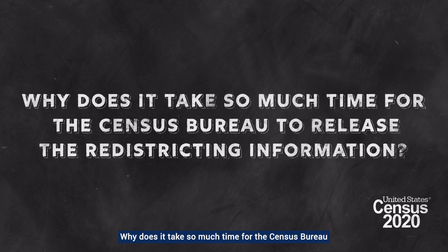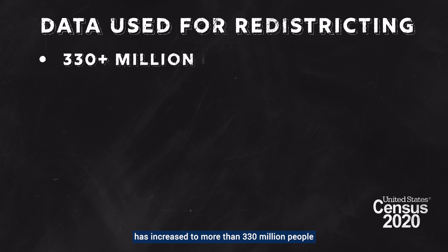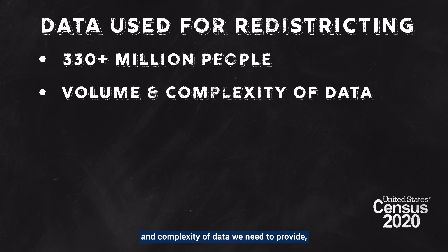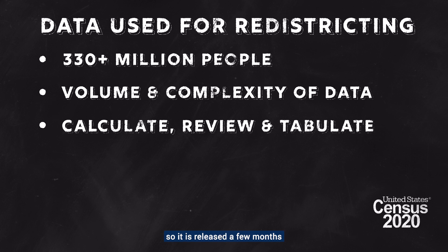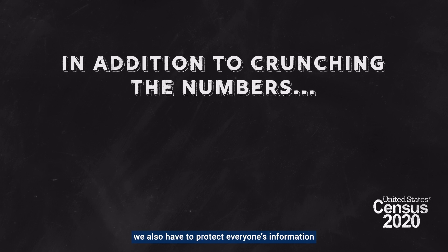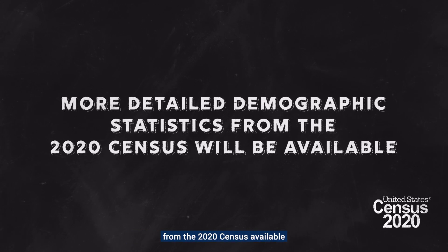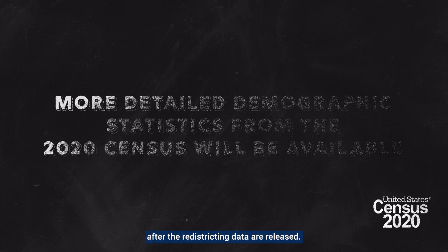Why does it take so much time for the Census Bureau to release the redistricting information? We have to take the time to get it right. The 2020 Census showed that our nation's population has increased to more than 330 million people since the 2010 Census. Because of the sheer volume and complexity of data we need to provide, it takes time for us to calculate, review, and tabulate the information. So it is released a few months after the apportionment counts, which tell us only how many people live in the country in total and how many people live in each state. In addition to crunching the numbers, we also have to protect everyone's information and ensure individuals can't be identified. We'll have more detailed demographic statistics from the 2020 Census available after the redistricting data are released.